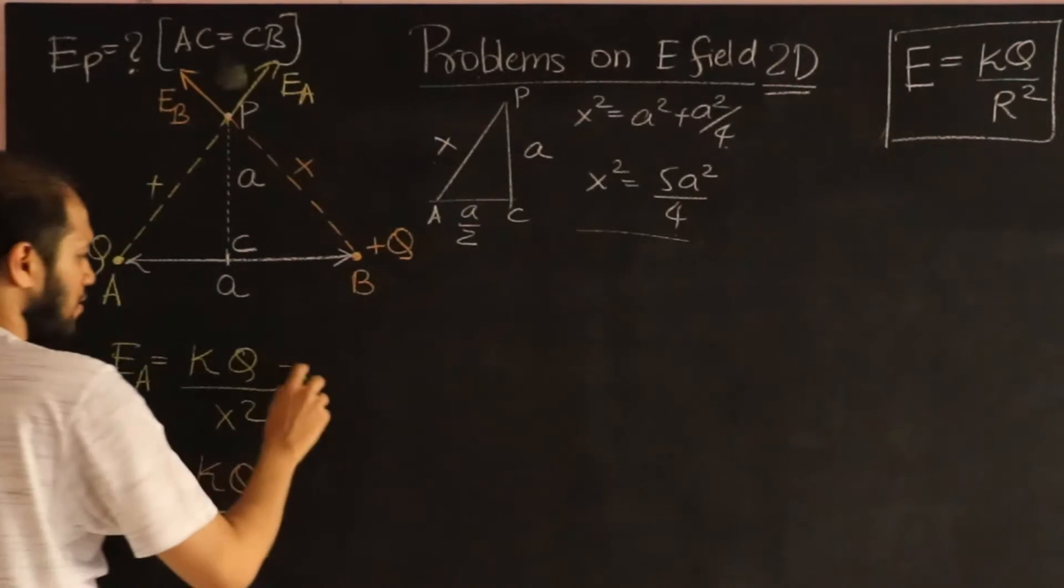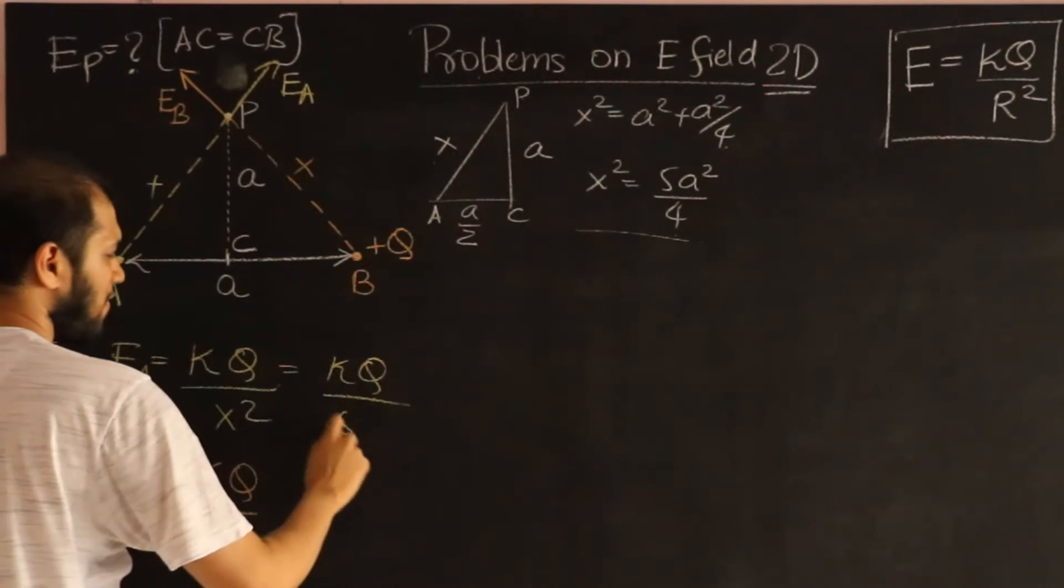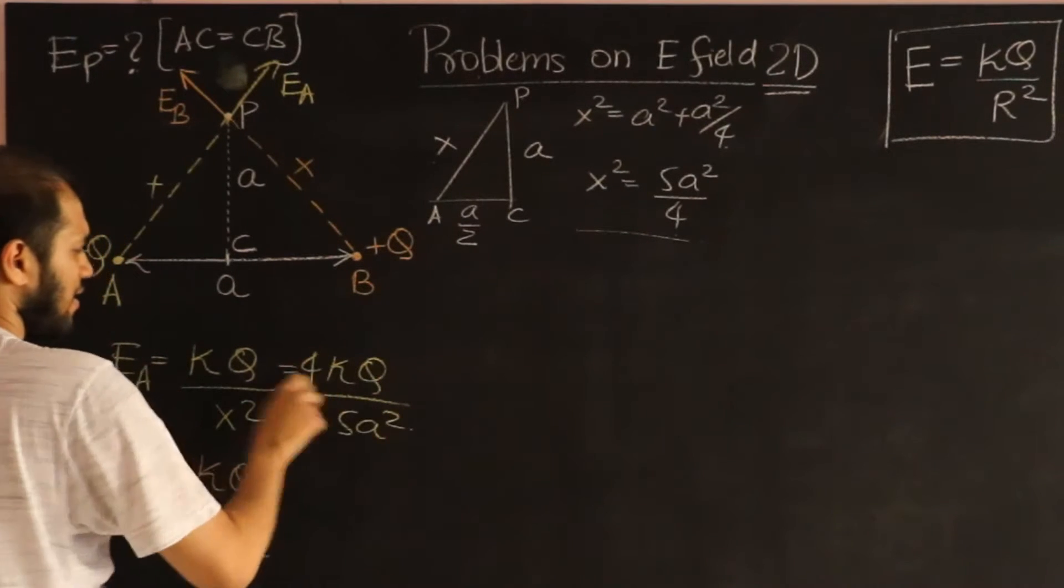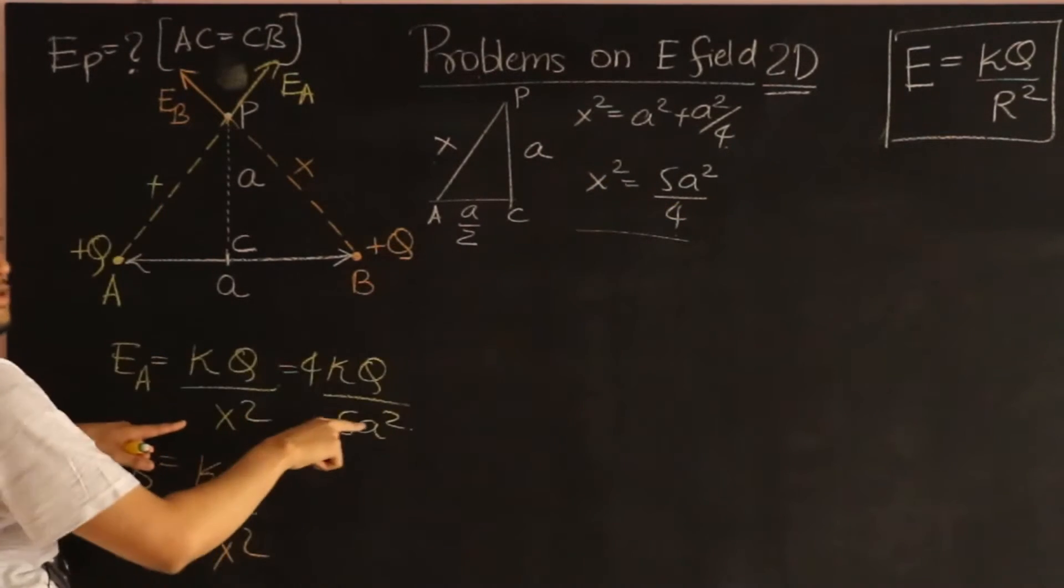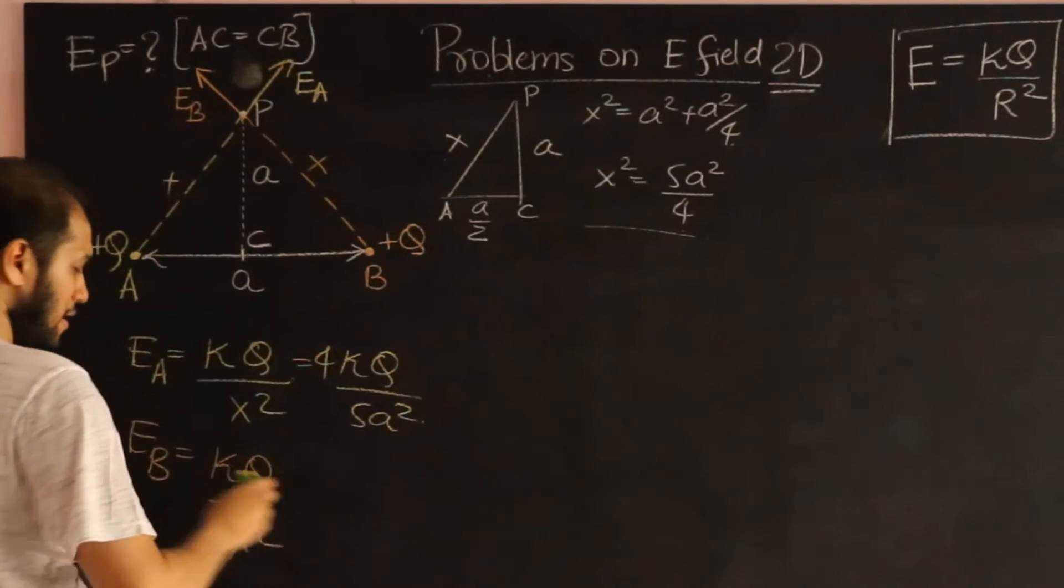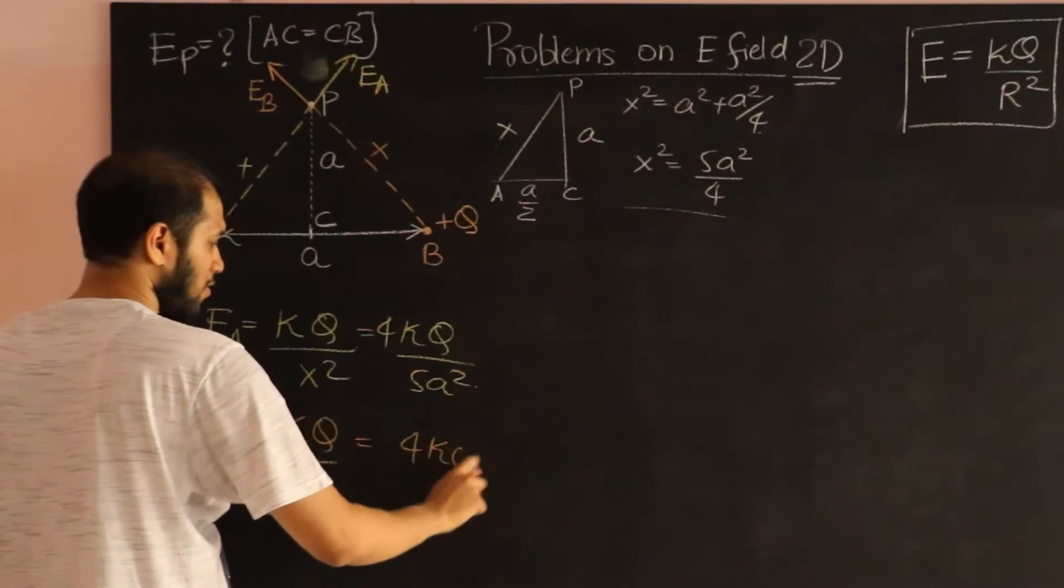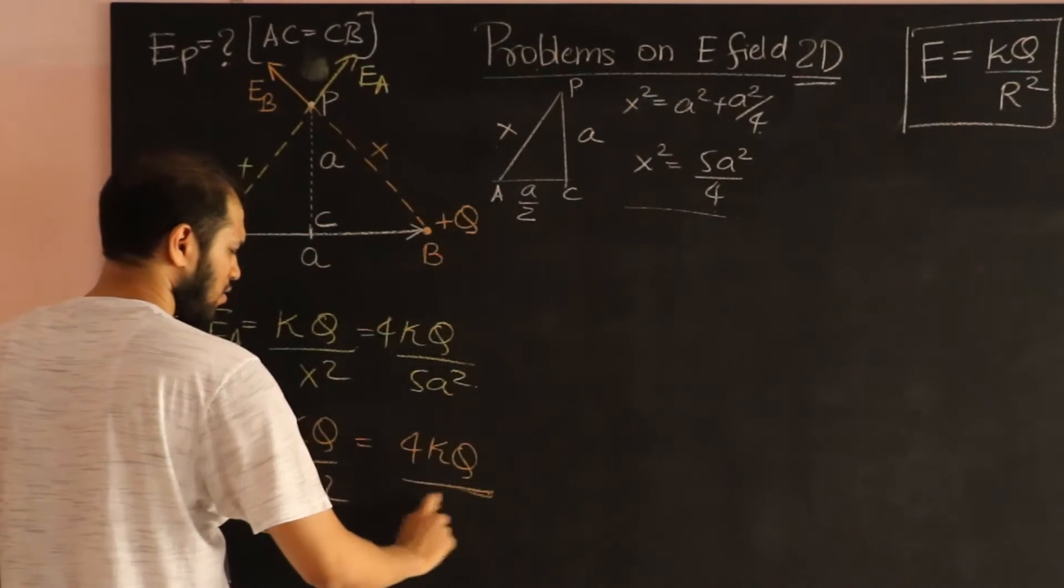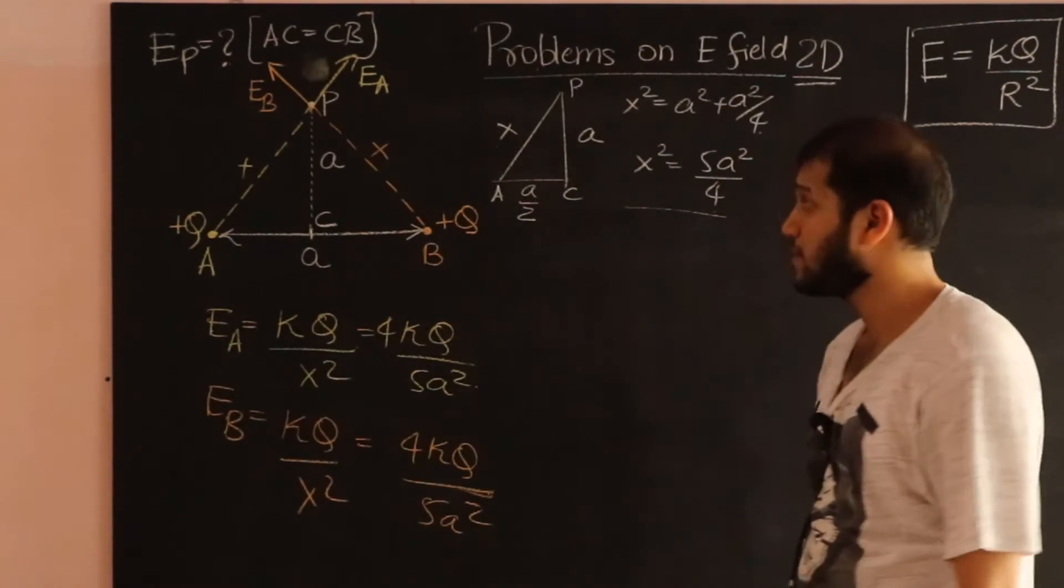X squared is 5A squared by 4. So I can substitute that over here now. KQ divided by 5A squared by 4. Because X squared itself is 5A squared by 4. I don't have to take the square root again or square again. So here it is. And similarly, this guy will also be the same number, 4KQ by 5A squared.